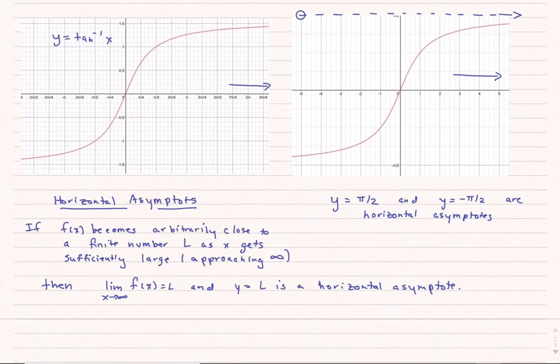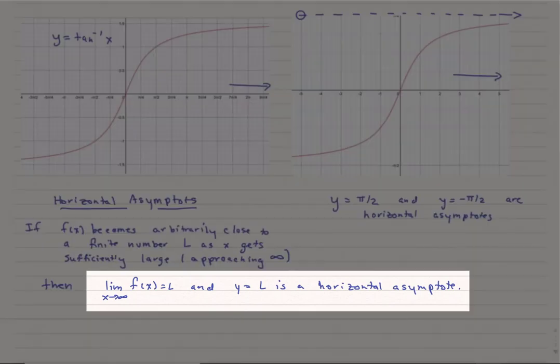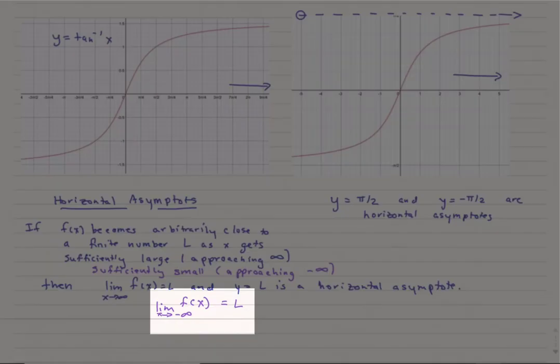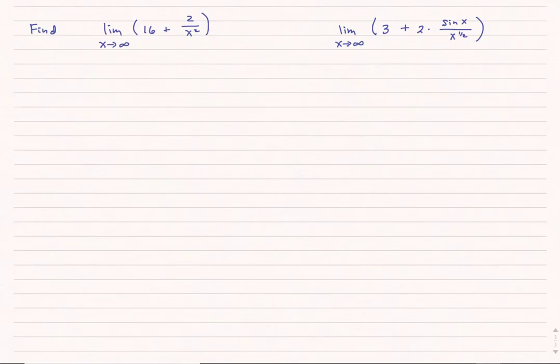In general, if I have a function f of x that becomes arbitrarily close to a finite number L as x approaches infinity, then the limit as x approaches infinity of f of x equals L, and y equals L is a horizontal asymptote. I can expand this to x approaching negative infinity as well: if x approaches negative infinity, we write the limit as x approaches negative infinity of f of x equals L.